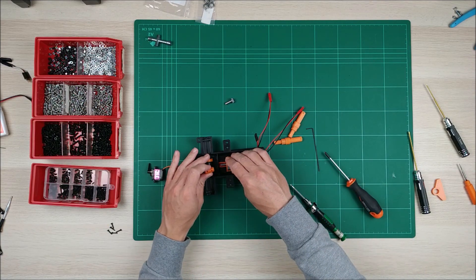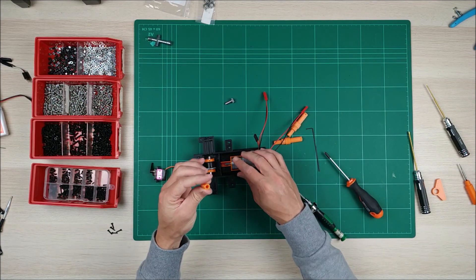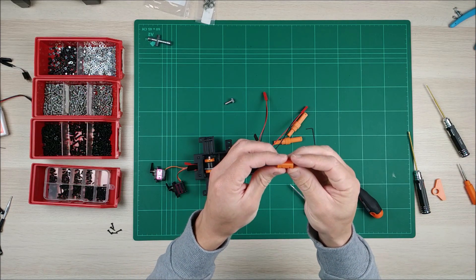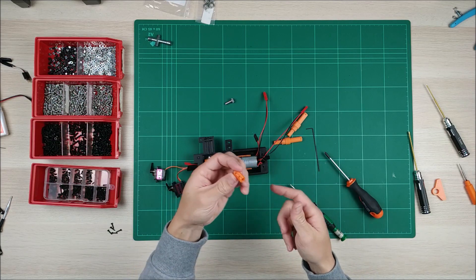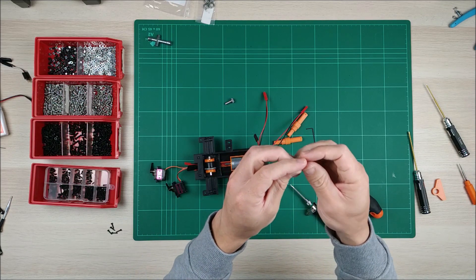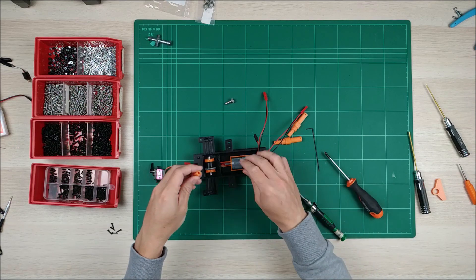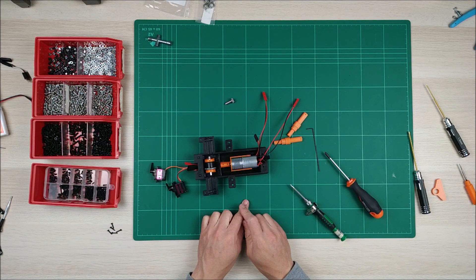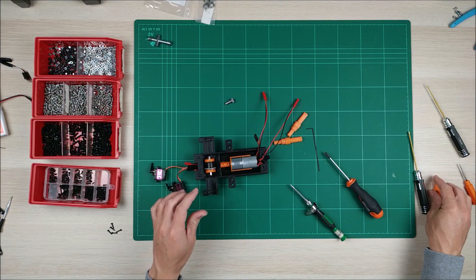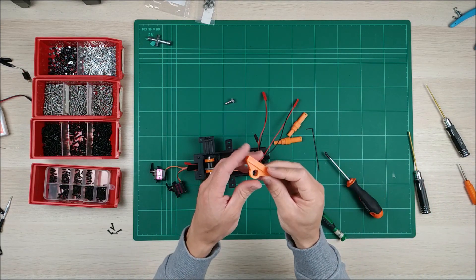But before inserting this, we have to use this. This is the coupling, the coupling part of the motor. This has a bigger hole and a smaller hole, and the smaller one goes like this. Now we're going to use this, another part.